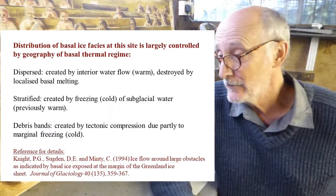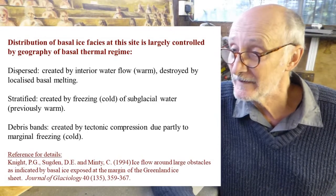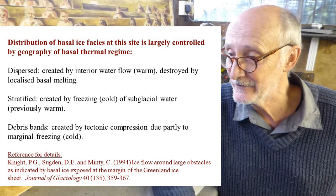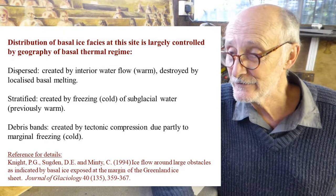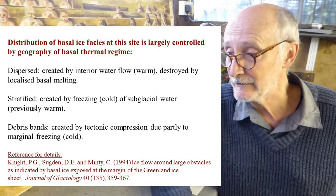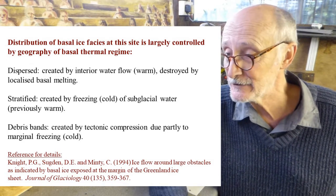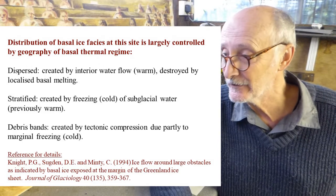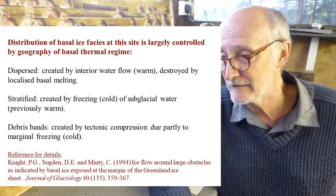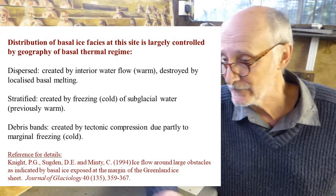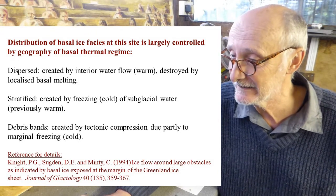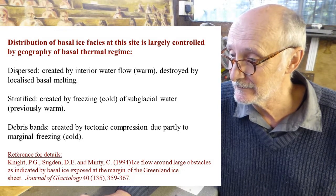The key points we arrived at: the distribution of basal ice facies at the site is controlled by the geography of the basal thermal regime. The dispersed ice is created in the interior and may be preserved as it flows towards the margin, or it might be destroyed by localised basal melting. The stratified facies is created by freezing of subglacial water — implying a warm location where that water was created. And the debris bands were created by tectonic compression due partly to marginal freezing. So all three key points about the origin of the different basal ice facies relate to the basal thermal regime.